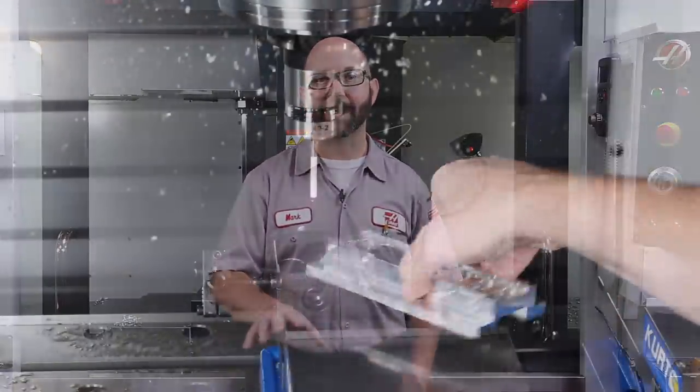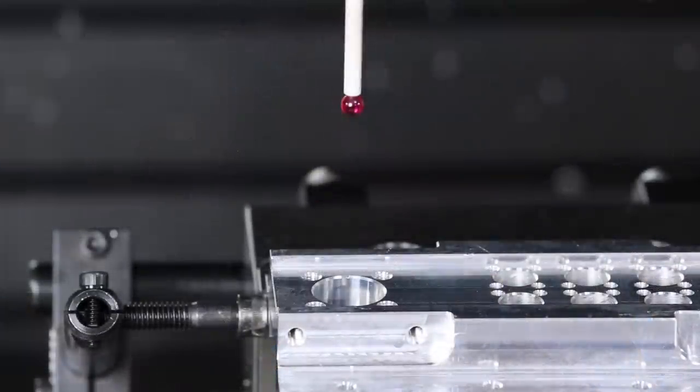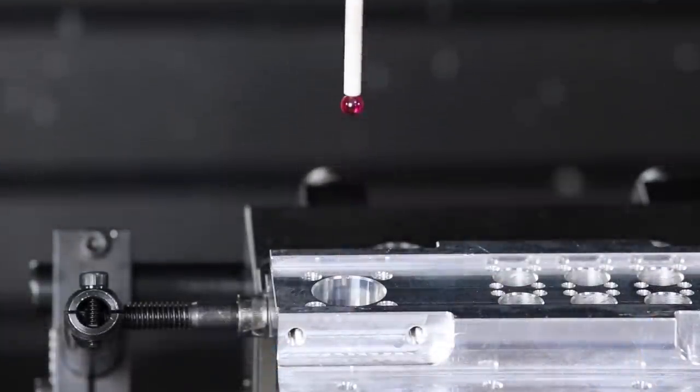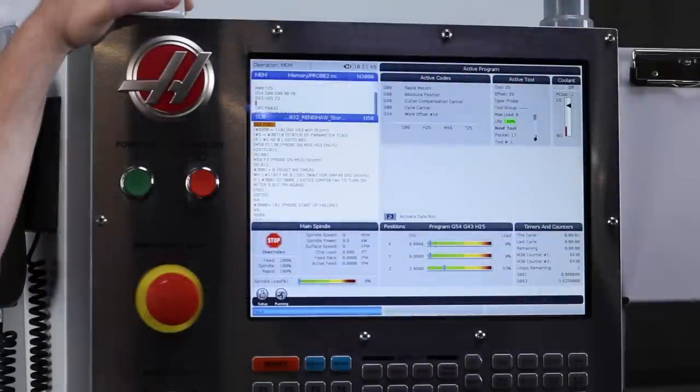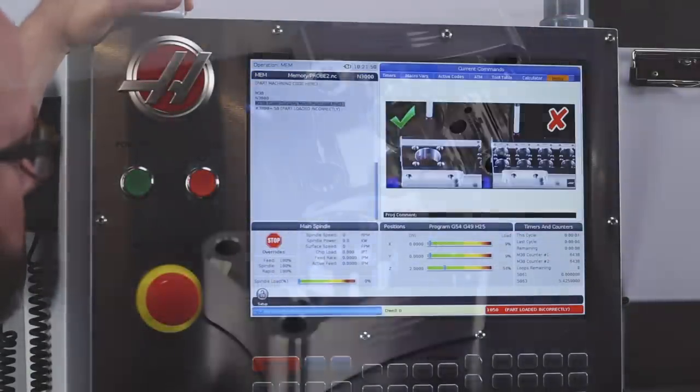Now I took the time to explain every bit of this code so you'd really understand it because you're going to have to write your own custom macro because every application is slightly different. So we found a feature on a part that can be measured and then we probed it and then we wrote some macro logic to alarm out if the part wasn't in the position that we'd like.